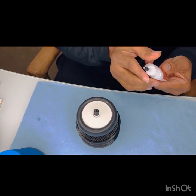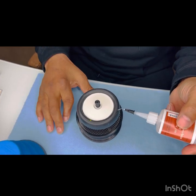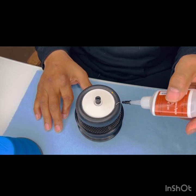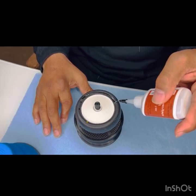Alright, so first of all, I like to use the glue at about a 45 degree angle and I like to start inside out and just do a slow process.